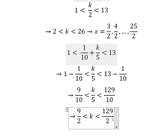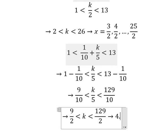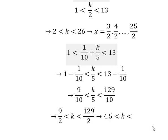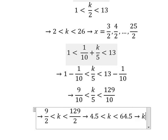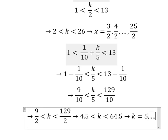And this one, 9 over 2, that is about from 4.5 to 64.5. So that means k will start from number 5 to number 64.